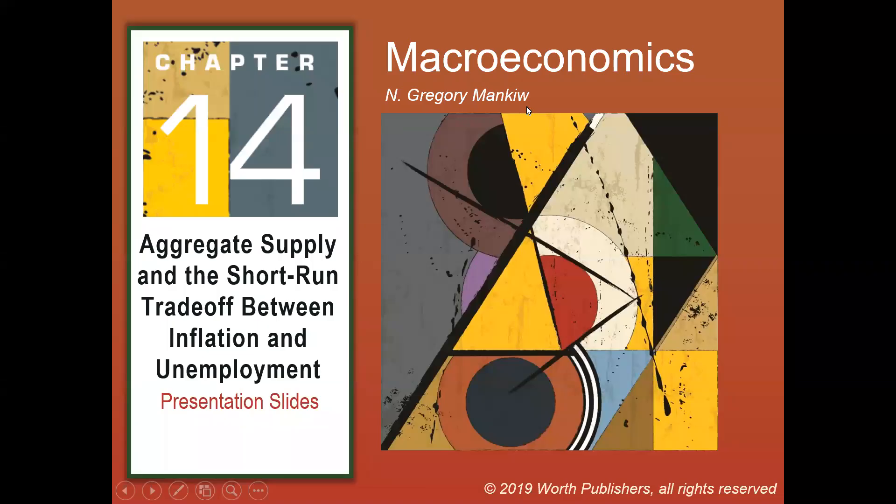Today we're going to start chapter 14, which is actually going to be the last chapter we cover this semester. We've spent the last several chapters digging deep into aggregate demand — how we can get aggregate demand from both the goods market and the money market, from both IS and LM. We're going to finish the semester by taking a look at aggregate supply.